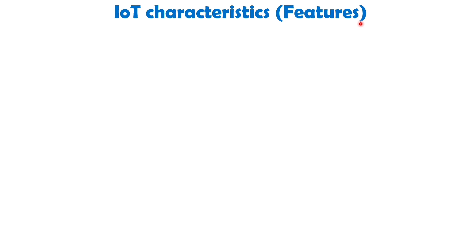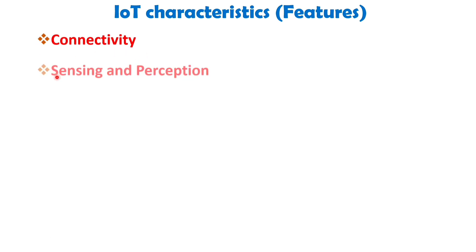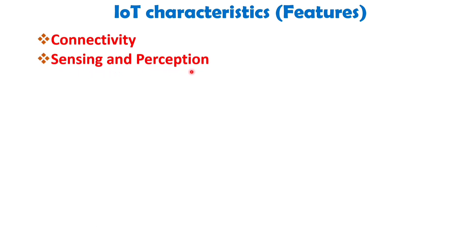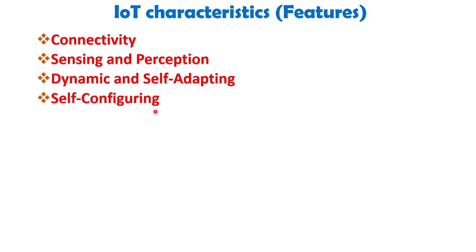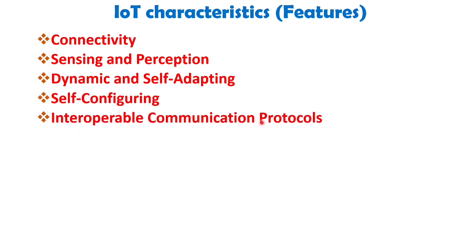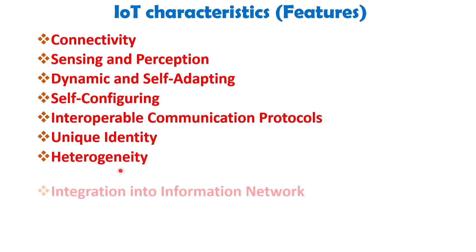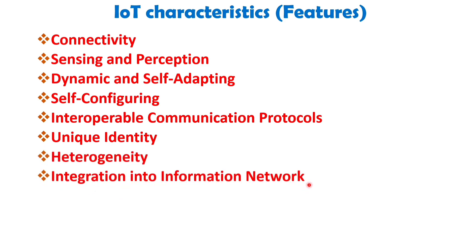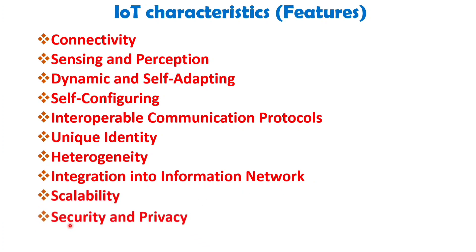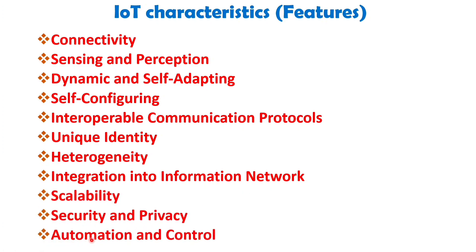Let me present the IoT characteristics in brief that I will be discussing shortly in more detail: Connectivity, Sensing and Perception, Dynamic and Self-Adapting, Self-Configuring, Interoperable Communication Protocols, Unique Identity, Heterogeneity, Integrated into Information Network, Scalability, Security and Privacy, and finally Automation and Control.